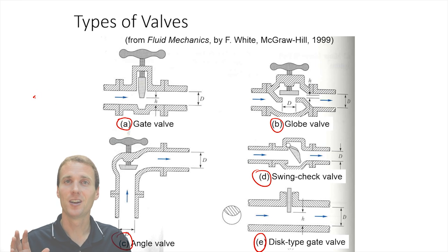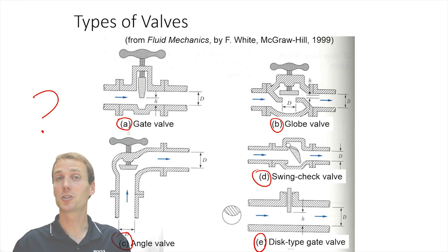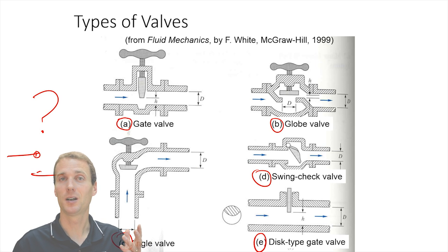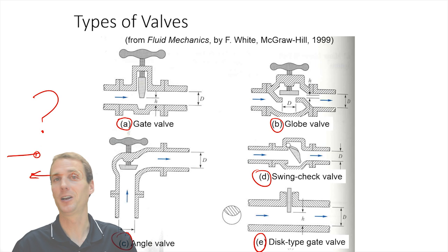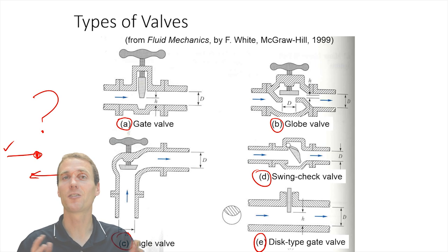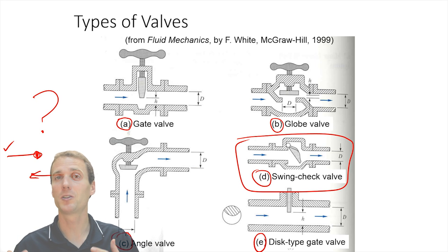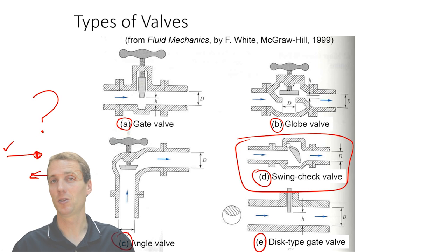Of all these valves, which one would be a good choice for preventing flow from going one direction but allowing it to go another direction? Looking at these different valves, we can see that a check valve, for example, would allow flow to go in one direction but would close off as the flow tried to go the other direction.